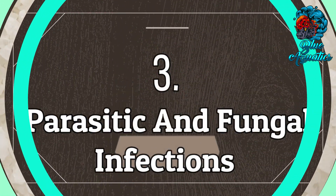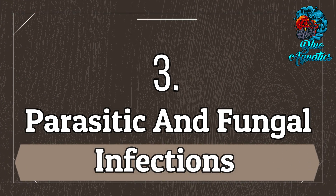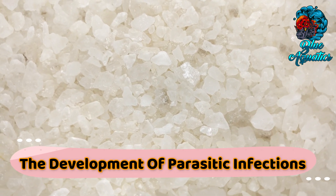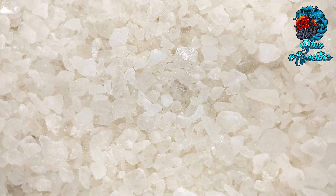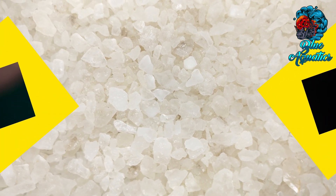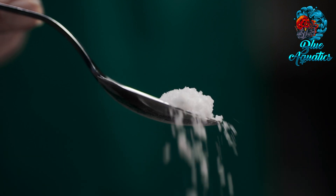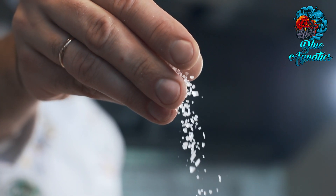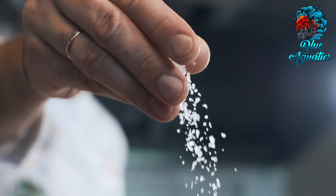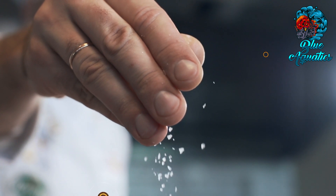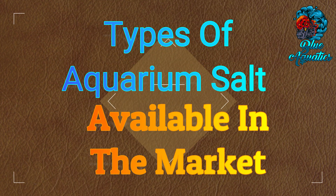Next is parasitic and fungal infections. Aquarium salt not only protects against the development of parasitic infections, but in the case of some fungi and parasites it is not 100% effective. When flowerhorn fish are already sick, special baths should be used in a solution with a higher concentration.